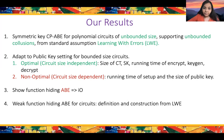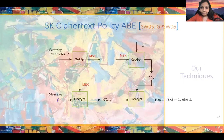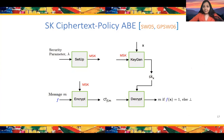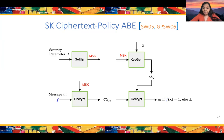Let me talk about our techniques. A CP-ABE consists of setup, keygen, encrypt, and decrypt. In the symmetric key setting, setup only outputs a master secret key—there is no separate public key—and this master secret key is input to both encrypt and keygen. Keygen takes attributes X and produces the corresponding secret key. Encrypt takes a message M and a policy or function F and produces the corresponding ciphertext. Decrypt reveals M if and only if F(X) equals 1.